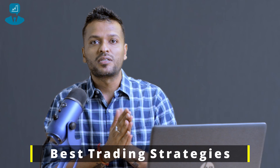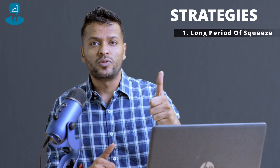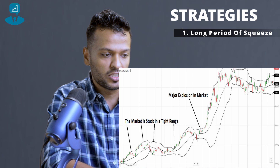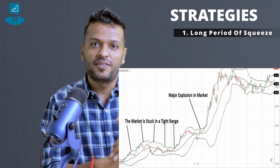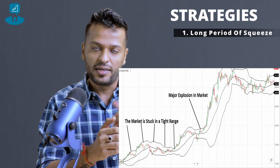Now that we've understood what trading strategies to avoid, let us understand the best trading strategies using Bollinger Bands. The first strategy is what I call the long period of squeeze. This is the chart of Tata Motors, and if you see in the chart, the market is stuck in a tight range. It is trading in a small band that looks like a sausage kind of band, and the market is not giving any indication about where it wants to go. This is the point when you know that any side the market opens up, there is bound to be a major move.